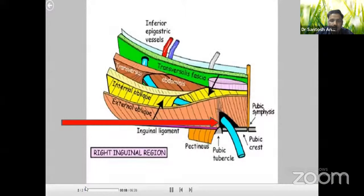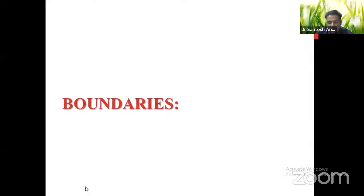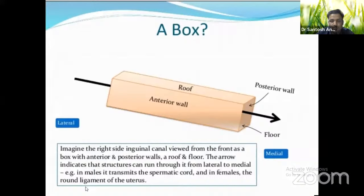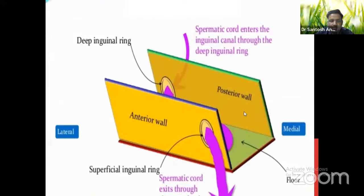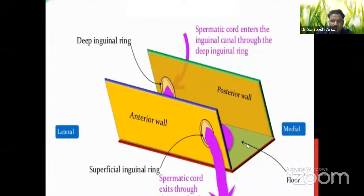The inguinal canal is an oblique musculo-aponeurotic canal with two rings — the deep inguinal ring laterally and the superficial inguinal ring medially — and four boundaries: an anterior wall, posterior wall, roof, and floor. You can imagine it like a box. In the posterior wall you can see the deep inguinal ring, and in the anterior wall the superficial inguinal ring.